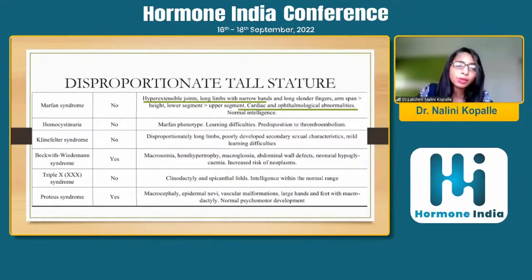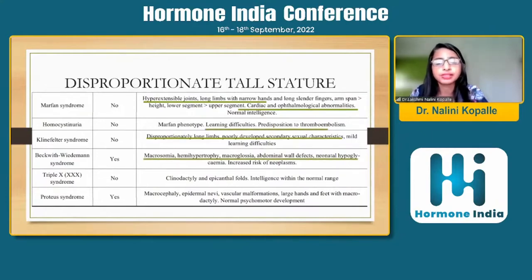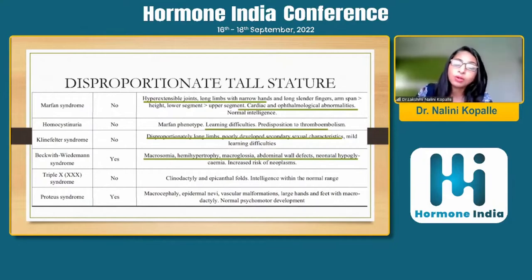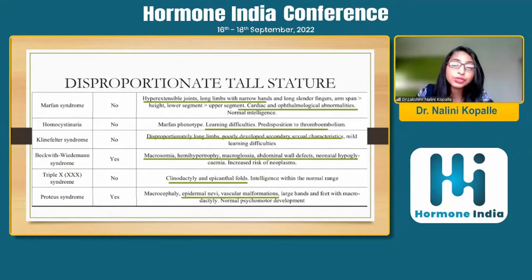Klinefelter syndrome in the disproportionate group: learning disabilities with difficulty in calculation skills and language skills are present, with only very subtle other features. Beckwith-Wiedemann syndrome and Proteus syndrome are the only two syndromes where the baby was large at birth and the child now has disproportionate tall stature. Beckwith-Wiedemann syndrome features: macrosomia, hemihypertrophy, macroglossia, abdominal wall defects, neonatal hypoglycemia, and increased risk of neoplasms. XXX syndrome: the most important features are clinodactyly and epicanthal folds; intelligence is normal and the patient will simply be tall with these features. Proteus syndrome is identified by macrocephaly, epidermal nevi, and vascular malformations.